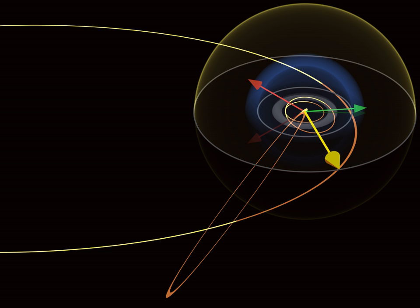Voyager 1 is still active. It is headed towards an encounter with star AC+79-3888, which lies 17.6 light-years from Earth, in about 40,000 years.